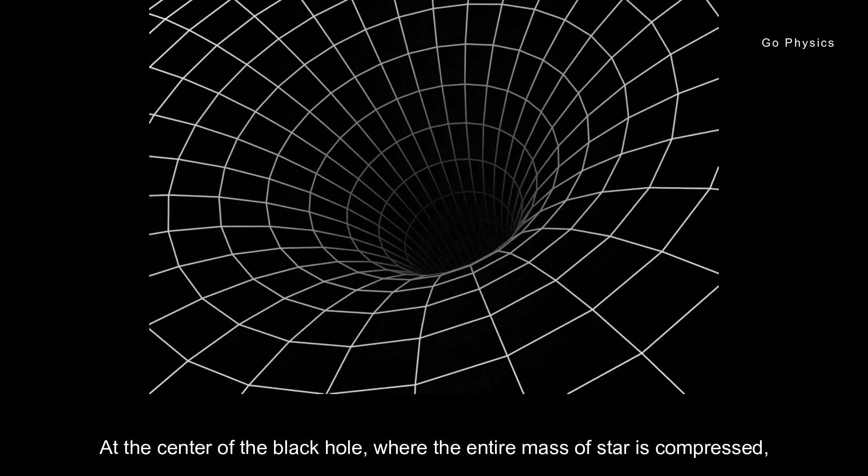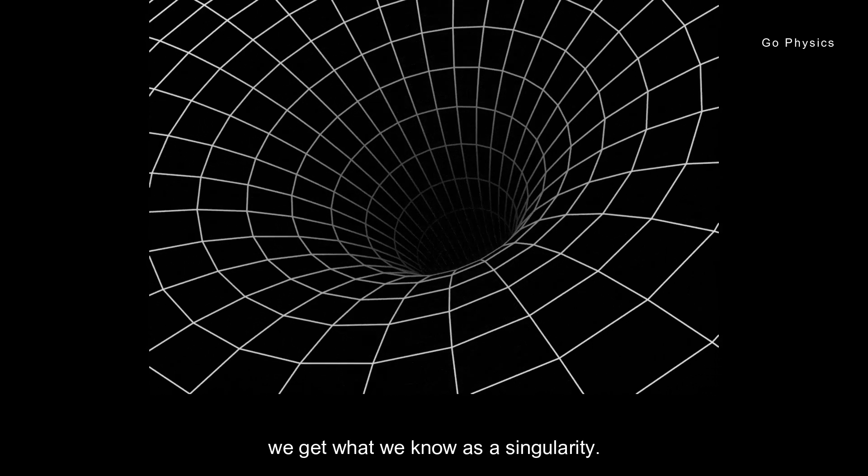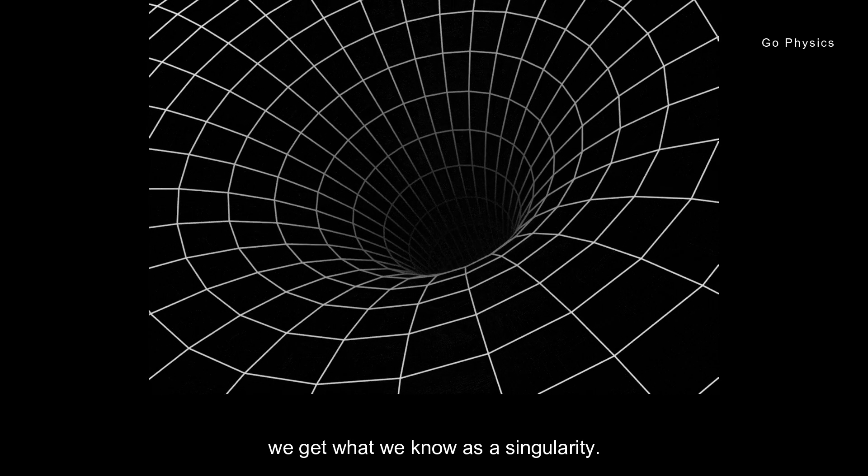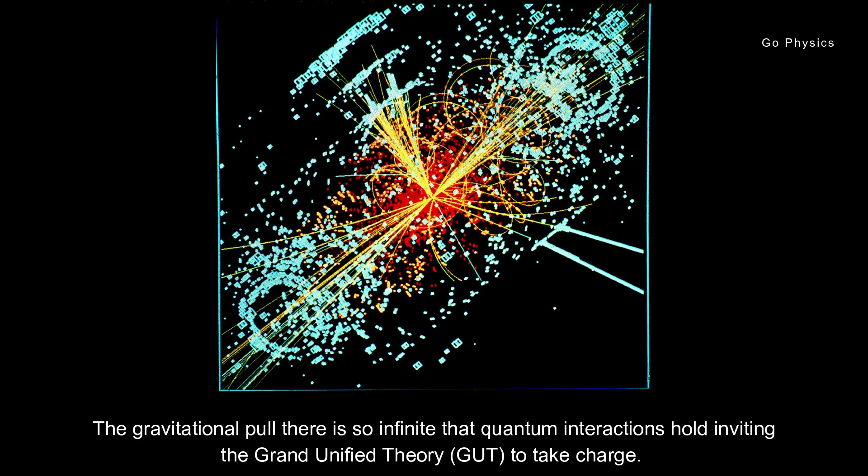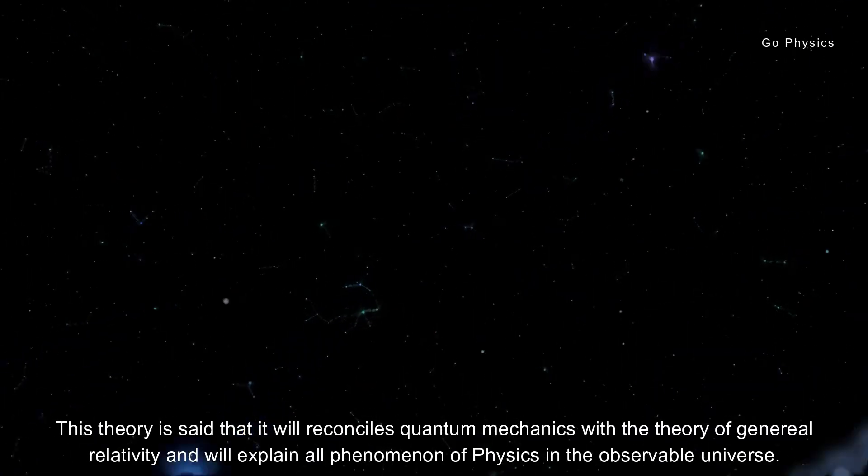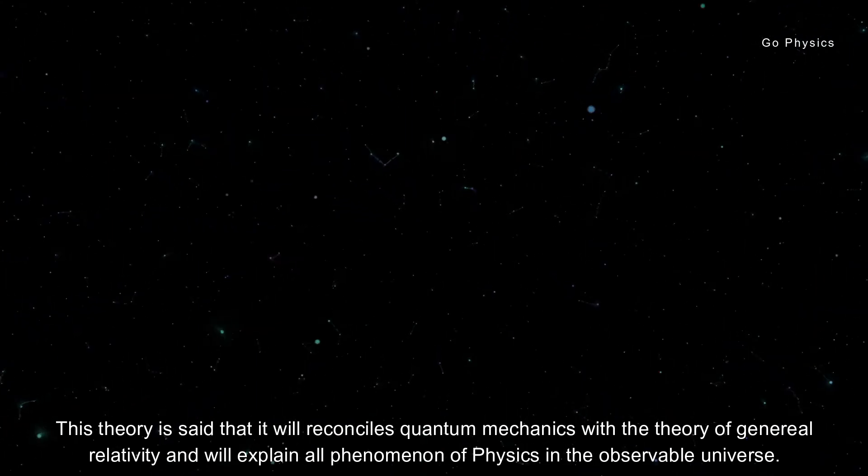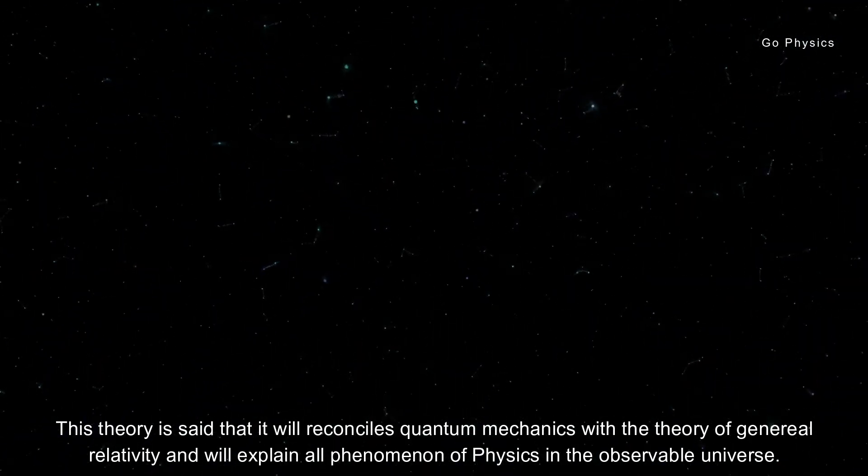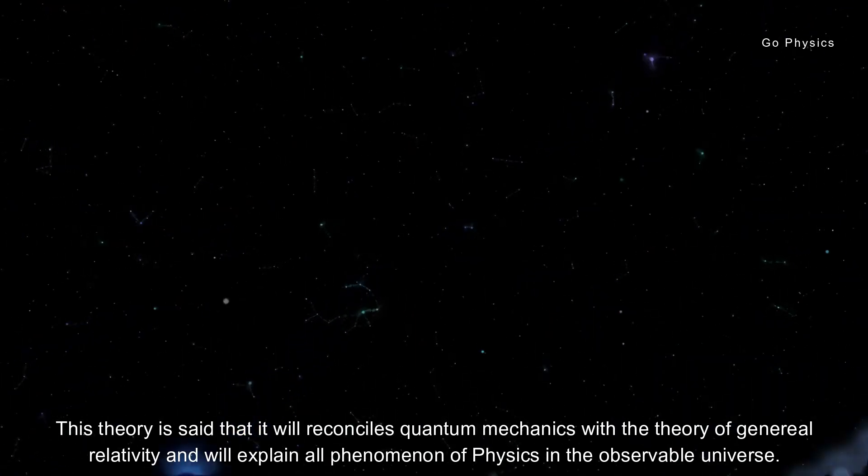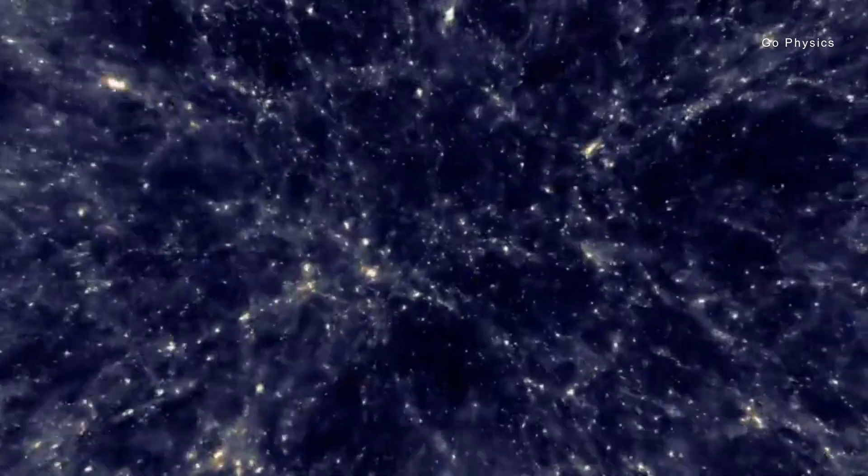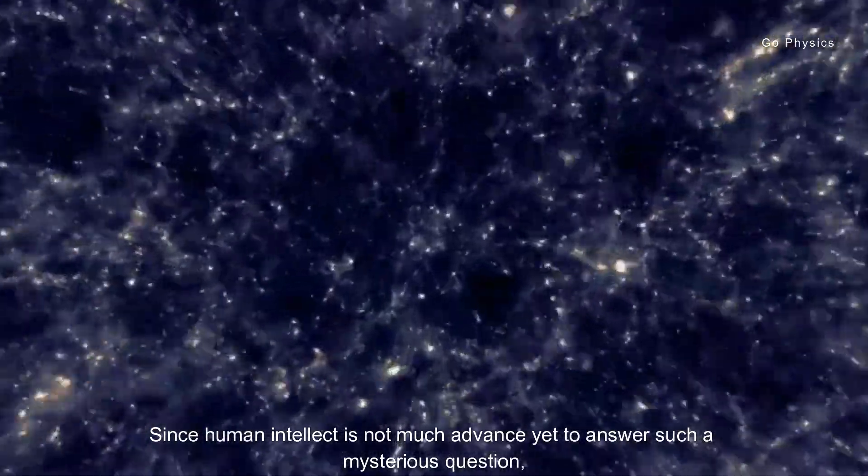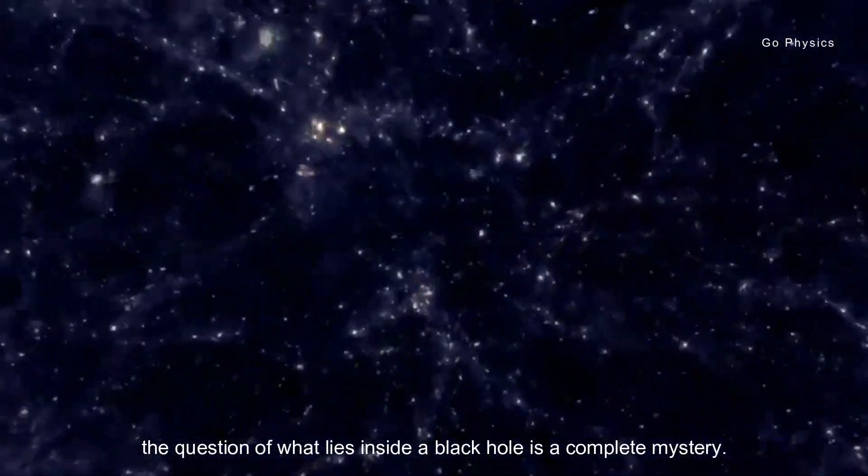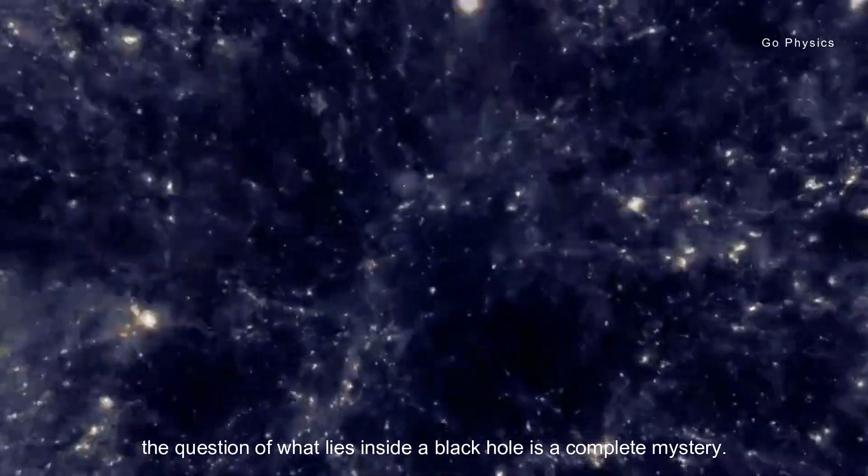At the center of the black hole, where the entire mass of the star is compressed, we get what we know as a singularity. The gravitational pull there is so infinite that quantum interactions hold, inviting the grand unified theory to take charge. This theory is said to reconcile quantum mechanics with the theory of general relativity and will explain all phenomena of physics in the observable universe. Since human intellect is not advanced enough yet to answer such a mysterious question, the question of what lies inside a black hole is a complete mystery.